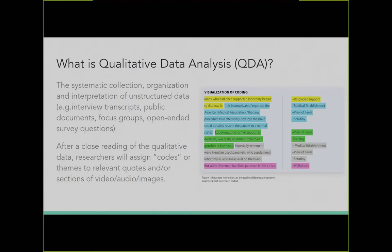Interview transcripts, public documents, focus groups, survey questions, images of cats. After a close reading of the qualitative data, researchers will assign codes — you can see what that looks like in the visual; yellow is rescinded support, blue has a few — which will then be assigned to relevant quotes or sections of video, audio, and images that will become the theoretical underpinning of the researcher's analysis and further work.